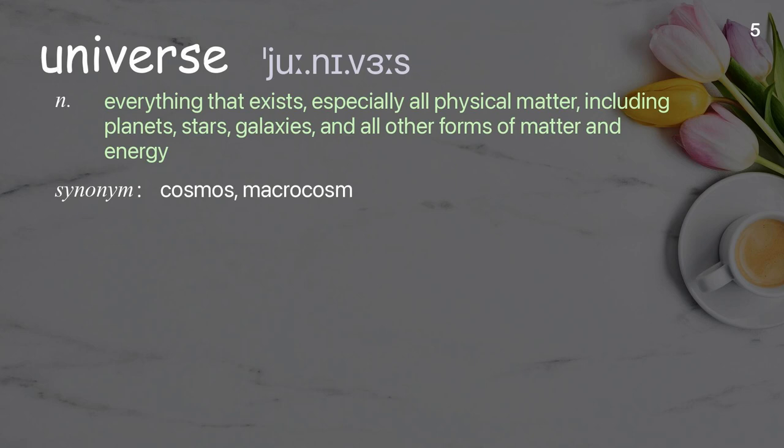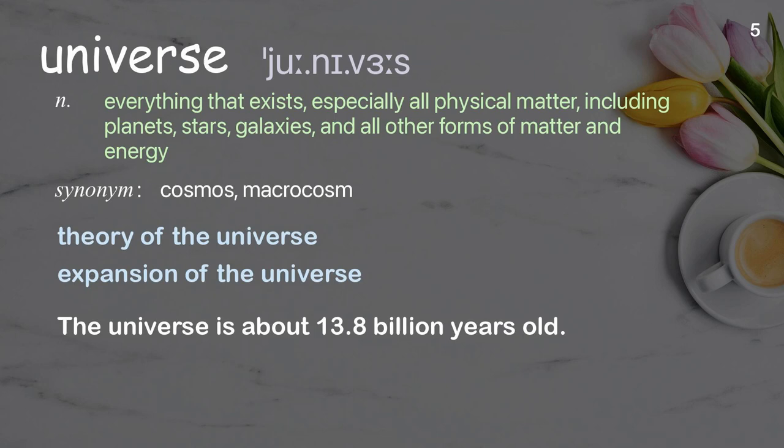Universe: Everything that exists, especially all physical matter, including planets, stars, galaxies, and all other forms of matter and energy. Examples: Theory of the universe, Expansion of the universe. The universe is about 13.8 billion years old.